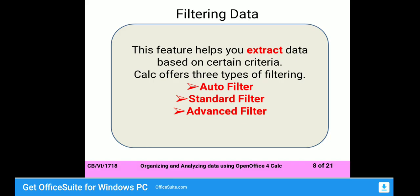Filtering means getting particular information from the bulk of data — this is known as extracting. So filtering means filtering the data that is important to you from the bulk of data. There are three types of filtering: Auto Filter, Standard Filter, and Advanced Filter.